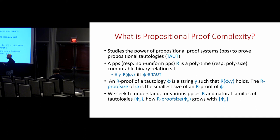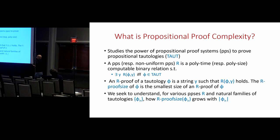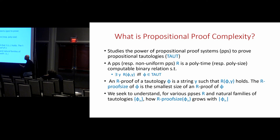The key notion, defined by Cook and Reckhow, is a propositional proof system R. A propositional proof system is a polytime computable binary relation R for tautologies: there exists a y such that R(φ, y) if and only if φ is in TAUT. It's essentially a nondeterministic algorithm for tautology. This equivalence captures both soundness and completeness: completeness because if φ is a tautology there exists a y with R(φ, y), and soundness because if such a y exists then φ is in TAUT.